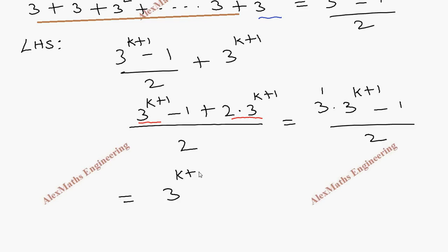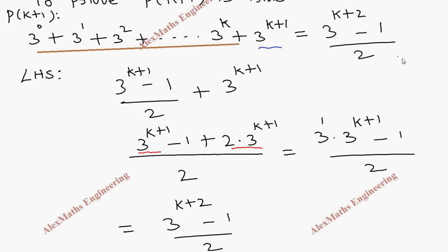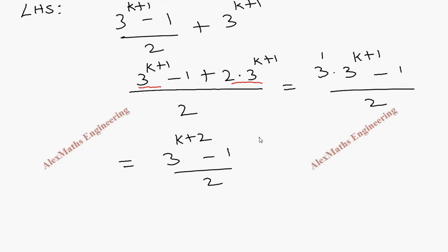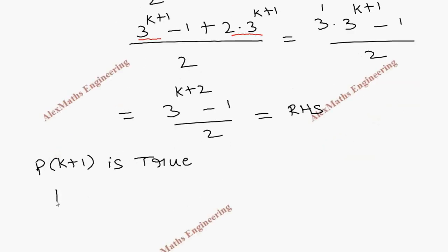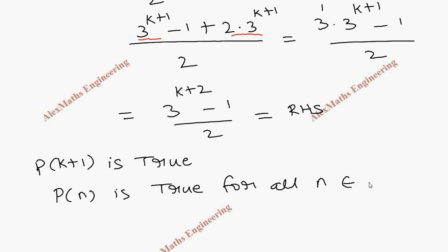So we took the LHS and got the RHS: 3 power k plus 2 minus 1 by 2. Hence we can say P of k plus 1 is true, and therefore P of n is true for all n belonging to the natural numbers.